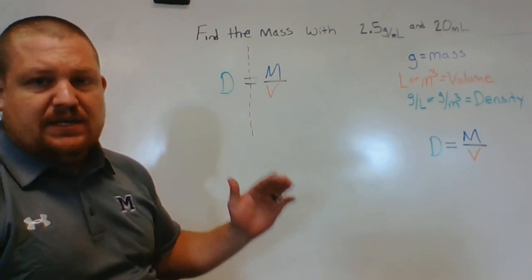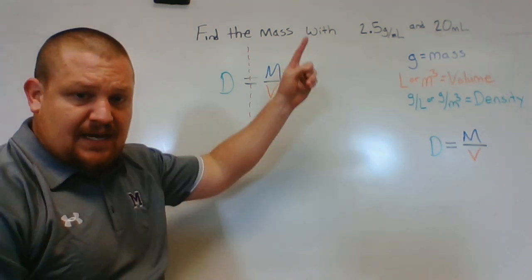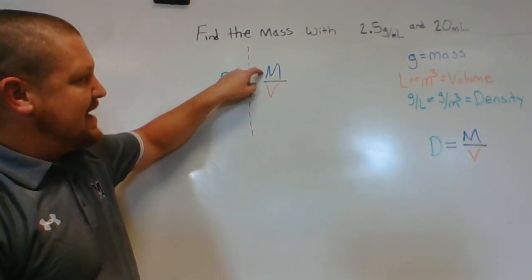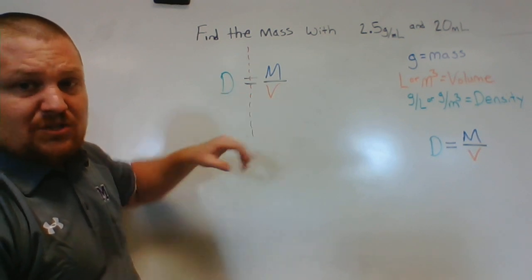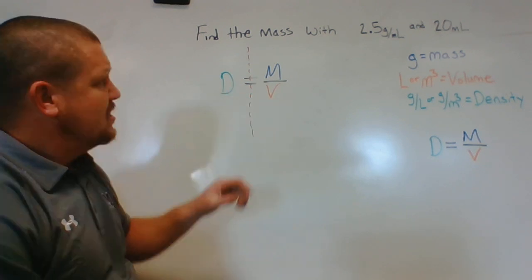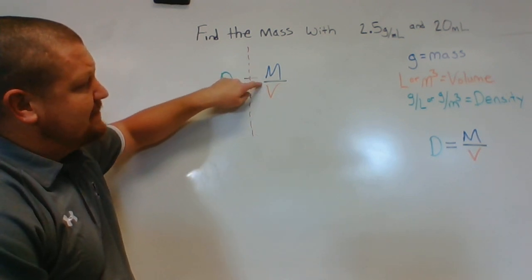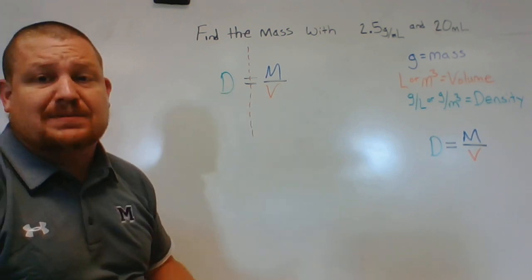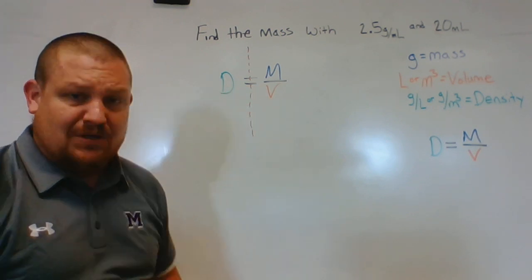I like to say do the opposite action of what is already there and you should be good with that. So let's read the equation left to right, top to bottom. This says density equals mass divided by volume. So our action there is divided by, so instead of doing mass divided by volume, we're going to do the opposite of that, which is mass multiplied by volume.